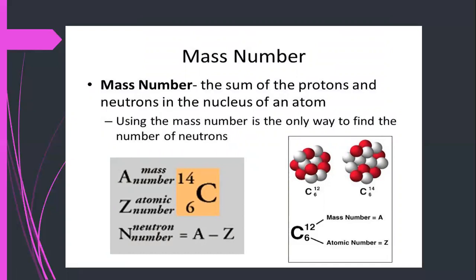Since protons and neutrons have approximately the same mass, and the mass of electrons is negligible, the mass number can be defined as the sum of the protons and neutrons in the nucleus of an atom. Using the mass number is the only way to find the number of neutrons.